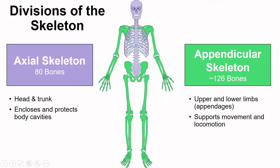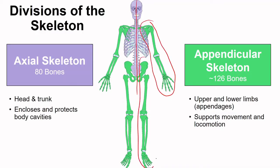Structurally and functionally, the skeleton is divided into axial and appendicular skeletons. The axial skeleton is this central portion right along the central axis of the body. This is made up of the skull, the ribs, and the vertebrae, and these protect the organs that keep us alive. The appendicular skeleton forms the limbs and enables us to walk and interact with the world — the upper limb and down here the lower limb.